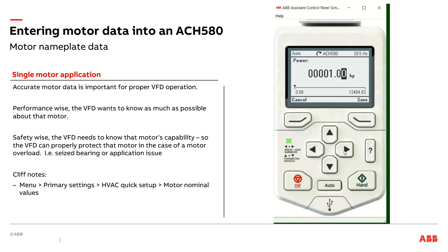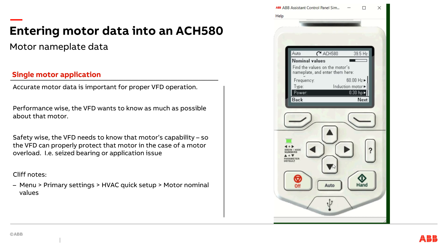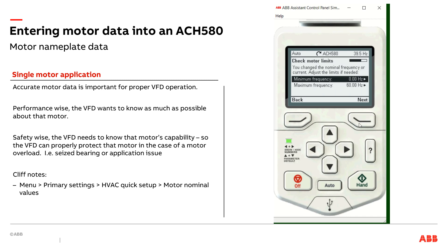By the way, it's a little guy — only 0.3 horsepower. I can put in the cosine, my power factor, if I want. It's not too critical for an HVAC drive in scalar mode. The other things at the end are not too critical either, so I can go ahead and hit next.